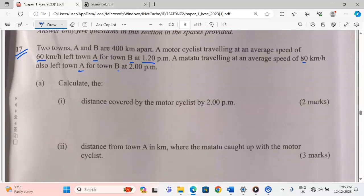Calculate part 1, the distance covered by the motorcyclist by 2 PM. By the time the matatu is starting at 2 PM, the cyclist has already traveled a certain distance. Distance is given by speed times time. At a speed of 60, from 1:20 PM up to 2 PM, it has traveled for 40 minutes. We convert them to hours by dividing by 60, giving us exactly 40 kilometers. That is the distance covered.